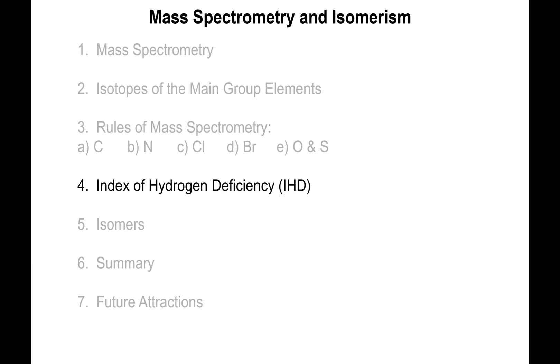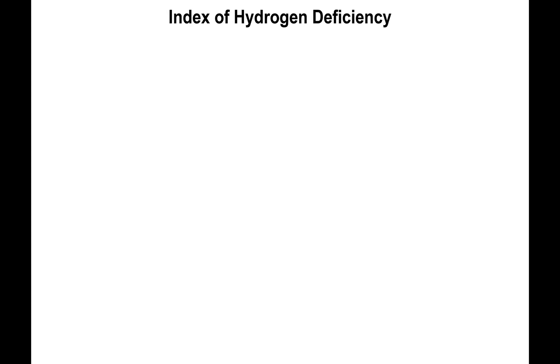Welcome back. We're going to talk about the Index of Hydrogen Deficiency, or IHD. The IHD tells you about how unsaturated your organic molecule is. Technically speaking, what this represents is how many fewer hydrogens your organic molecule contains when you compare it to the corresponding alkane.